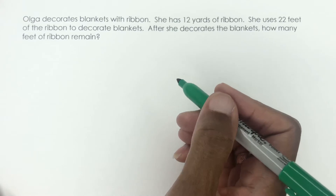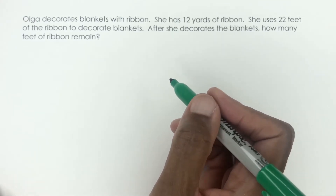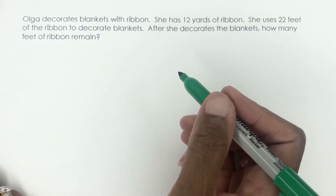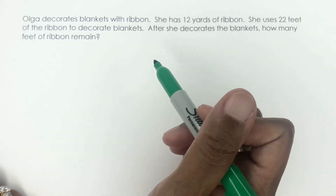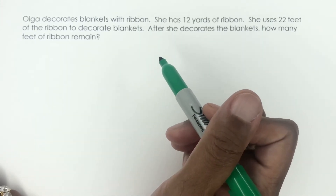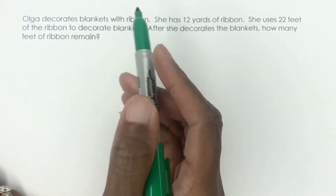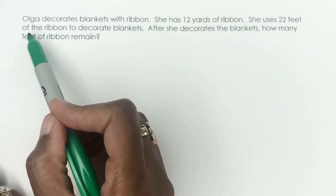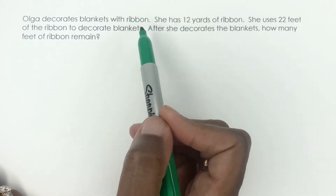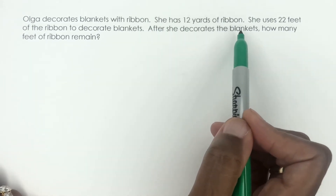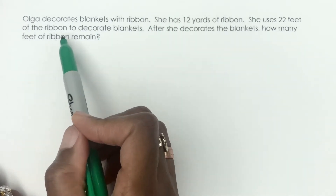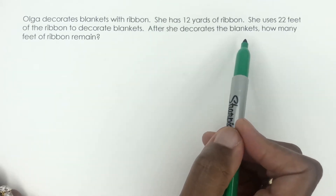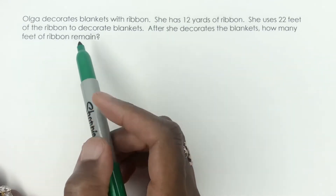If you read word problems too quickly, you can lose yourself — but it's okay. We're going to take one sentence at a time. Let's read the whole thing first and then break it down. So: Olga decorates blankets with ribbon. She has 12 yards of ribbon. She uses 22 feet of the ribbon to decorate blankets. After she decorates the blankets, how many feet of ribbon remain?